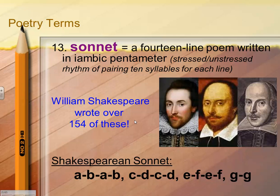Shakespearean sonnets follow the A-B-A-B, C-D-C-D, E-F-E-F, G-G rhyme scheme. These are the first 12 lines we're creating in our sonnet. You start by talking about your first event — many students chose their birth — and that line will end with your A rhyme. The next line, your next event, will end in your B rhyme. The third event will again rhyme with the first line because that's your A rhyme. If it's the same letter, those lines rhyme; if it's a different letter, they do not.